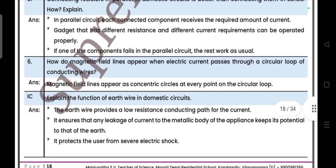Next question number six, how do magnetic field lines appear when electric current passes through a circular loop of a conducting wire? Explain the function of earth wire in domestic circuits. I'm not explaining here answers because video will become more longer, so take screenshot if you want answers or else write down the answers.